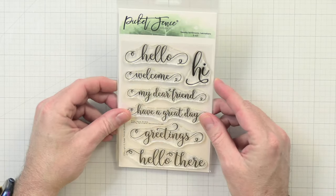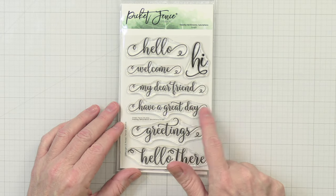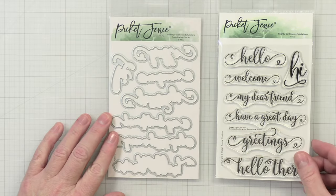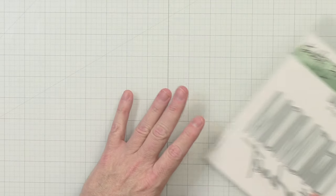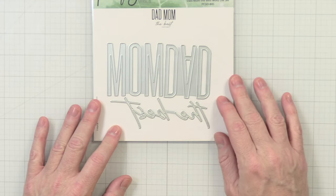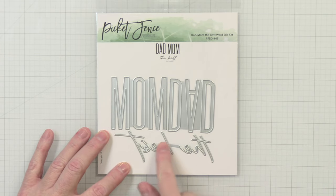And then up next we have some sentiments. This is Swanky Sentiments Salutations. We have: hello, welcome, hi, my dear friend, have a great day, greetings, and hello there. And there are coordinating dies. And then last but not least in stamps and dies, we have The Mom Dad The Best. Really great sentiment set. I really love how these are like mixed fonts. Really like that.